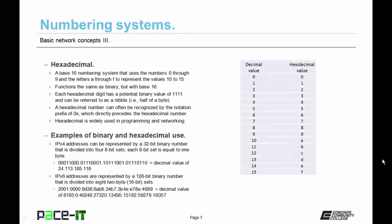Some examples of binary and hexadecimal use include IPv4 addresses, which can be represented by a 32-bit binary number that is divided into four eight-bit sets. Each eight-bit set is equal to one byte and is often called an octet. An IPv6 address, which is a 128-bit binary number, is usually represented by hexadecimal.